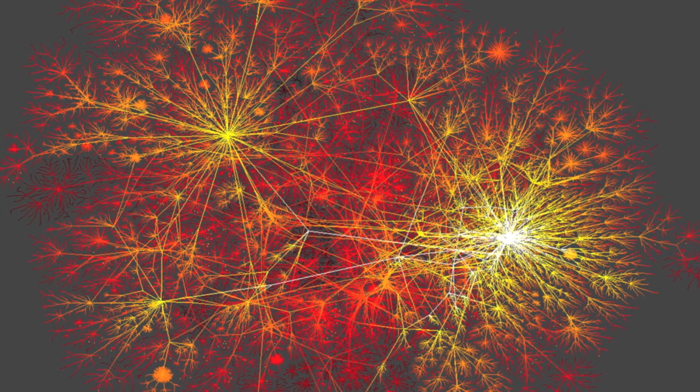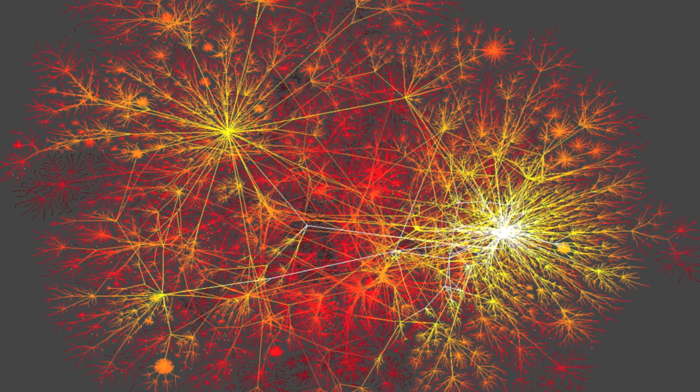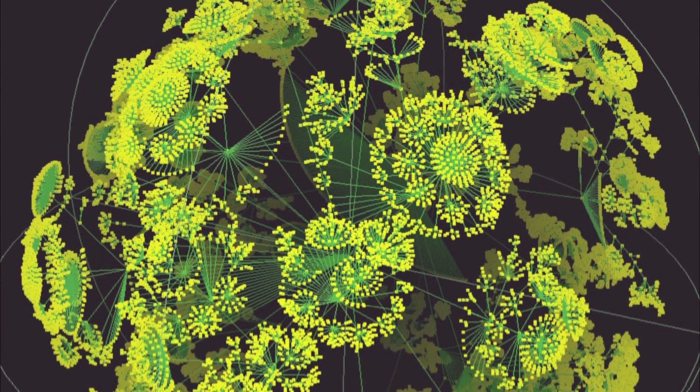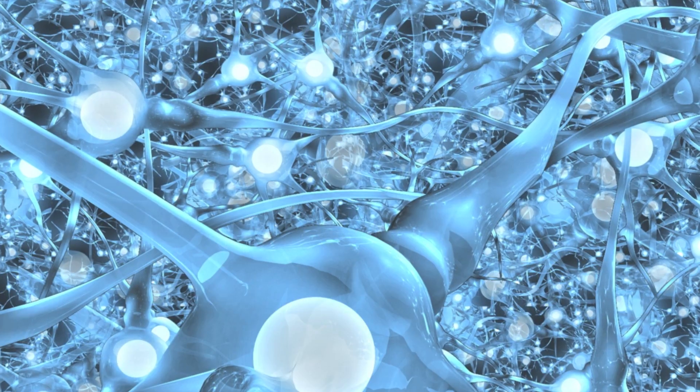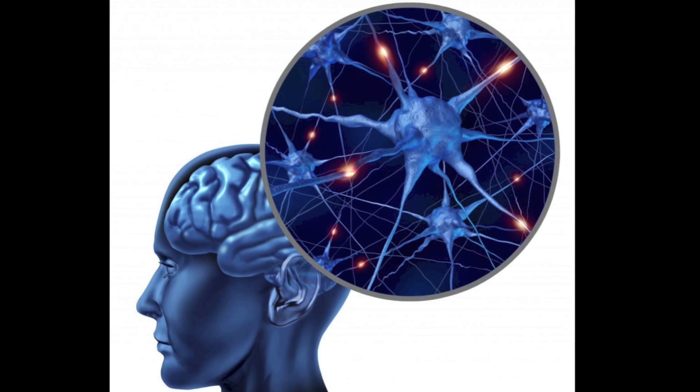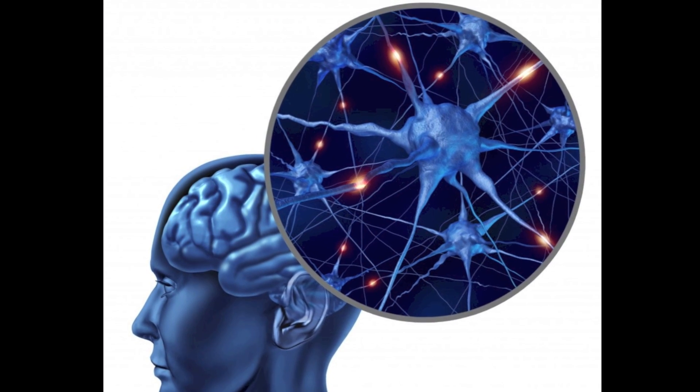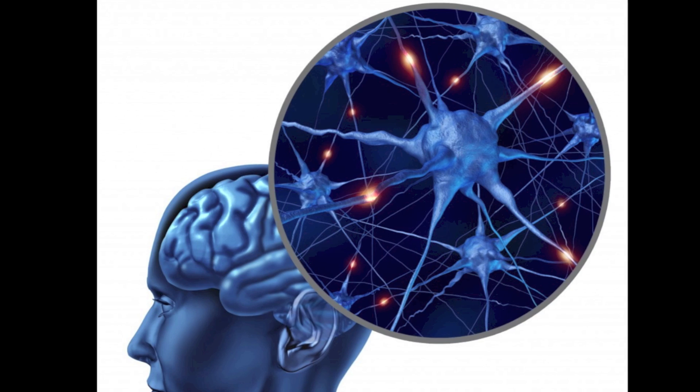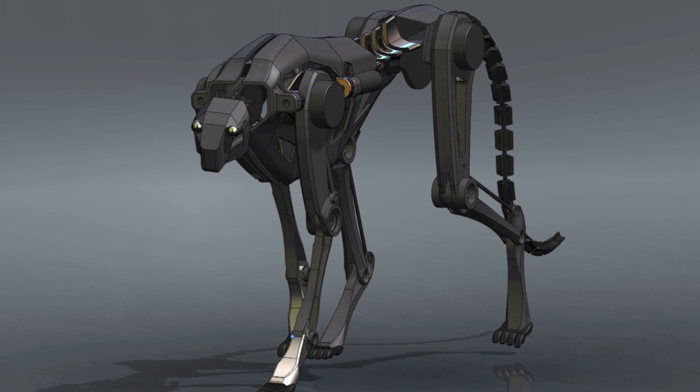Overall, our results help explain the evolutionary origins of modularity, which is one of nature's predominant organizing principles. The ability to evolve more complex, structurally organized neural networks will also aid scientists to harness evolution to solve challenging engineering problems, such as evolving artificially intelligent robots.